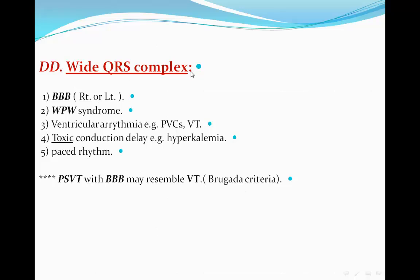The differential diagnosis of wide QRS complexes includes right bundle branch block, left bundle branch block, and non-specific intraventricular conduction delay. Other causes are WPW syndrome with accessory pathways, ventricular arrhythmias like PVCs or VT, metabolic conduction delay such as hyperkalemia, and pacemaker rhythm — since the pacemaker wire is typically inserted in the right ventricle, producing a bundle branch block-like pattern.